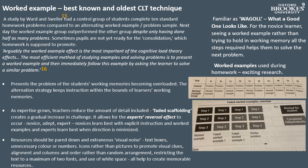Worked examples are not a substitute for teaching. However, they work as a substitute for the list of problems students are usually asked to solve after the lesson. The most efficient method is to present a worked example and then immediately follow it by asking the learner to solve a similar problem. This prevents students' working memories from becoming overloaded during the traditional long instructional phase. The alteration strategy keeps instruction within the bounds of learners' working memories. As pupils' expertise grows, teachers can reduce the amount of detail included in the worked examples — this is known as faded scaffolding and creates a gradual increase in challenge.